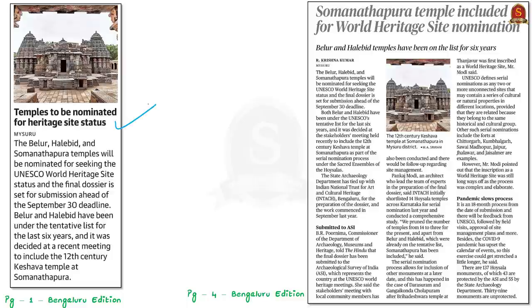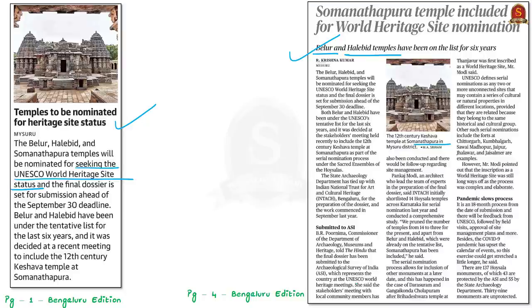The second news article discusses temples in Karnataka that are to be nominated for UNESCO World Heritage Site status. These include the Belur, Halebidu, and Somanathapura temples. Belur and Halebidu are located in Hassan district of Karnataka — both were once capitals of the Hoysala Empire. The Chennakeshava temple complex in Belur was built by King Vishnuvardhana in 1170 AD, in memory of his victory over the Cholas at Talakadu. In Halebidu, the main temples include the Hoysaleswara temple and the Kedareswara temple. The term Halebidu literally means 'ruined city,' as it was ruined twice by the Sultanates of Bahmani. The Hoysaleswara temple was built in the 12th century and is attributed to the Hoysala ruler Vishnuvardhana.